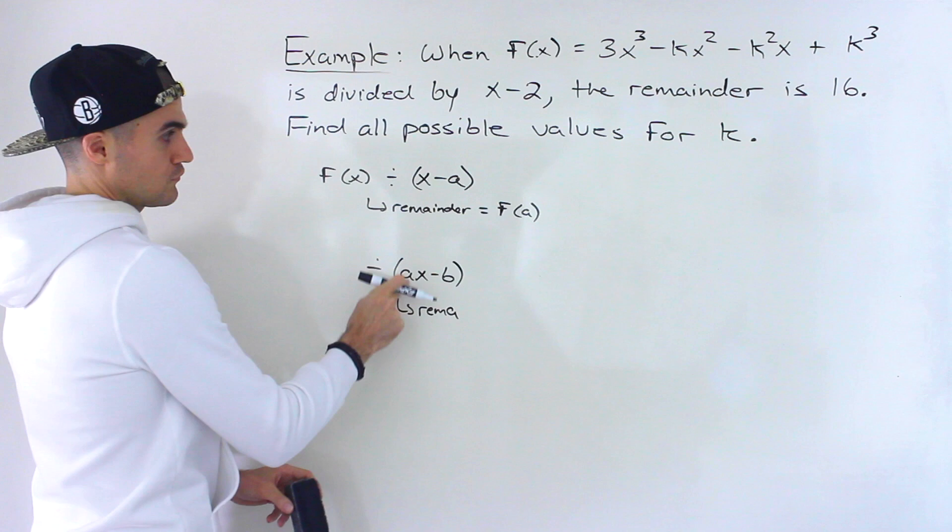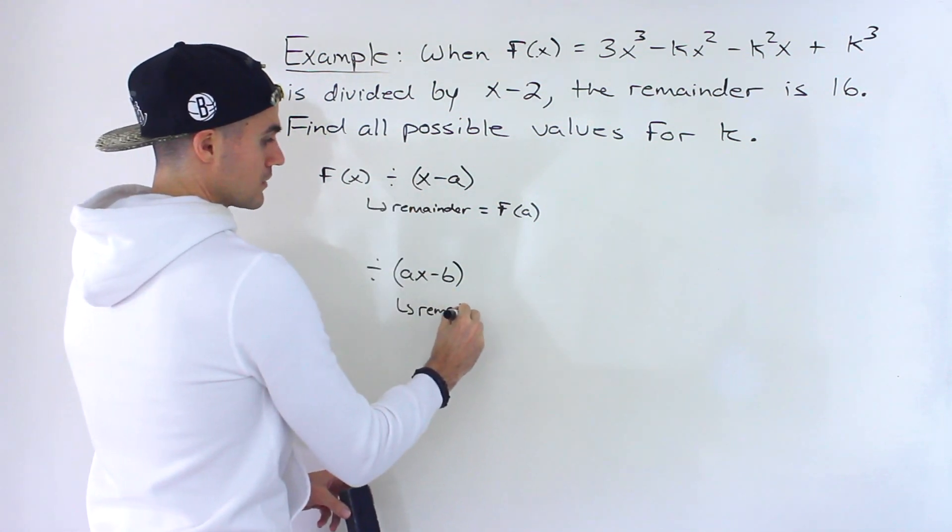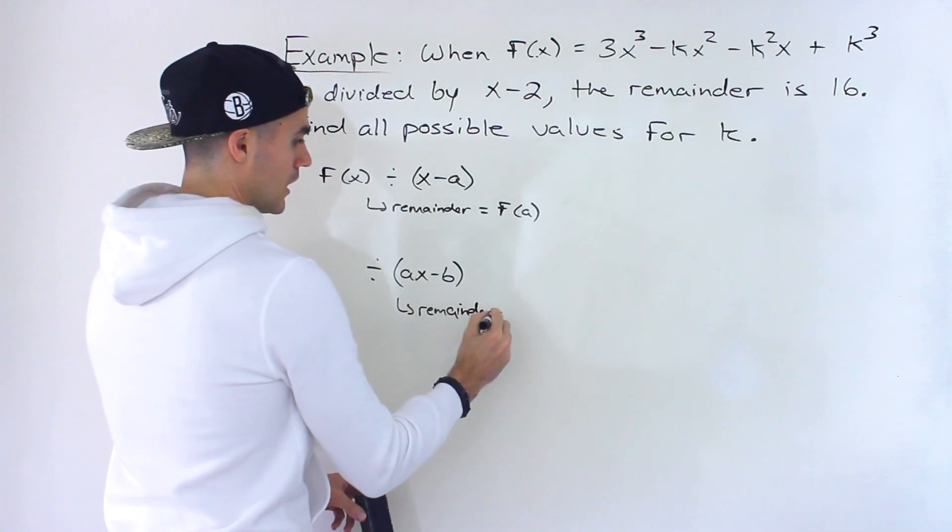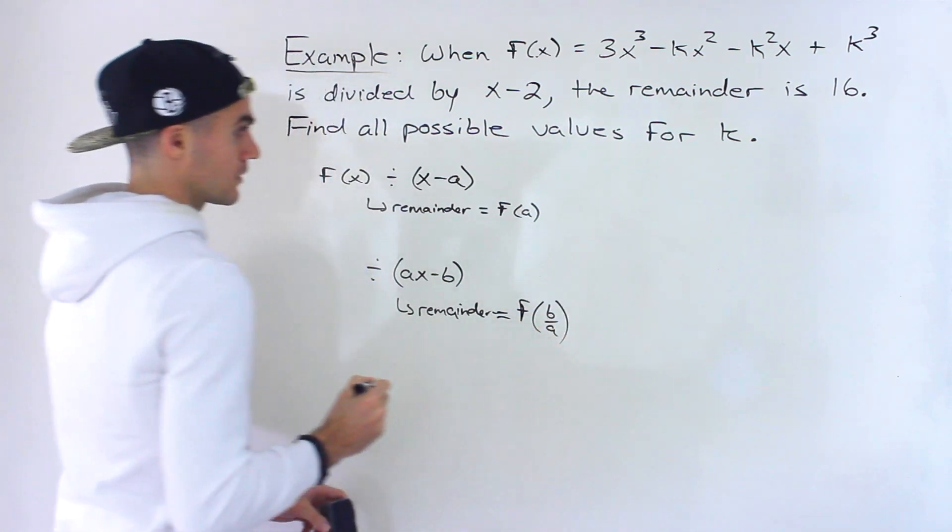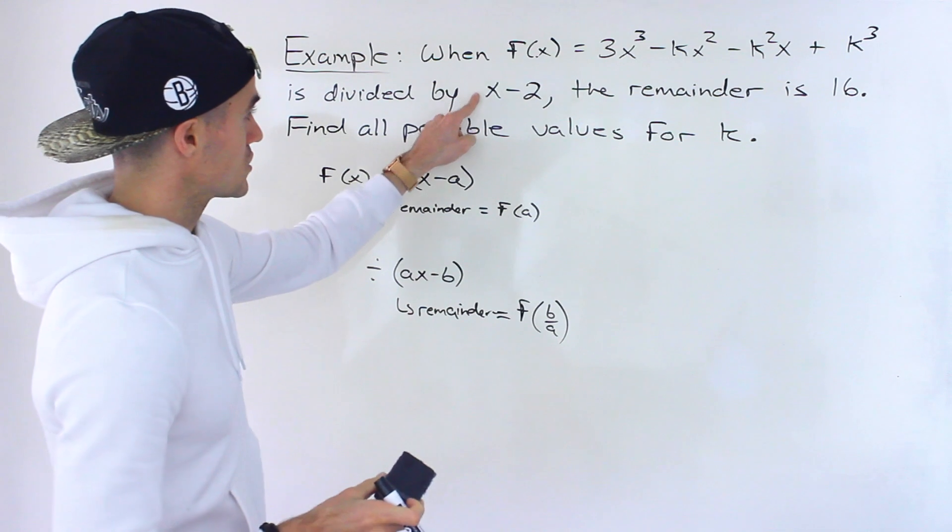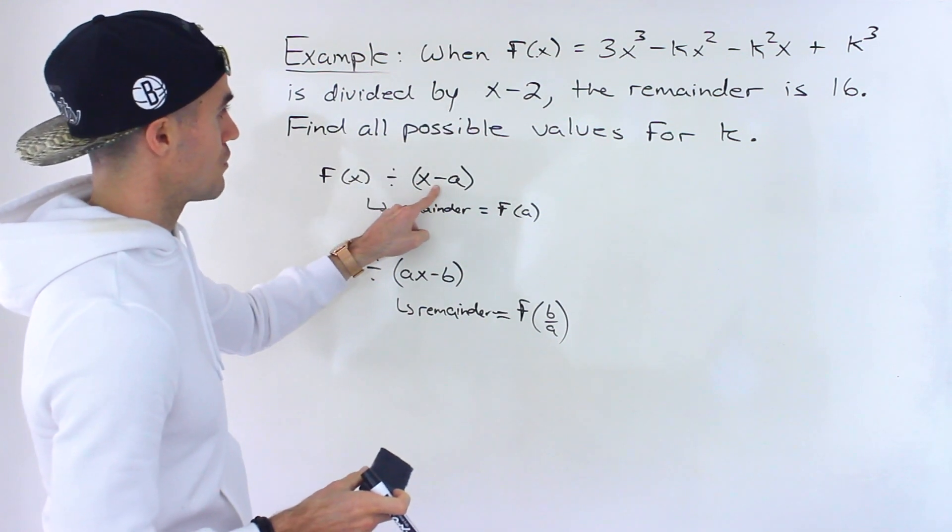Or if it's divided by ax - b, where there's another coefficient in front of x, not just 1, then the remainder would equal f(b/a). Just as a quick reminder. But in this case it's just 1, so we can use the simpler form.